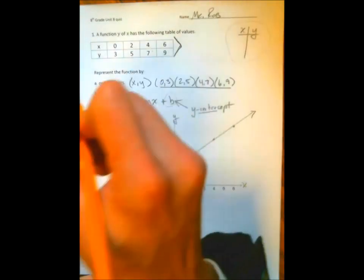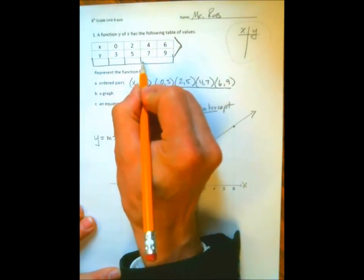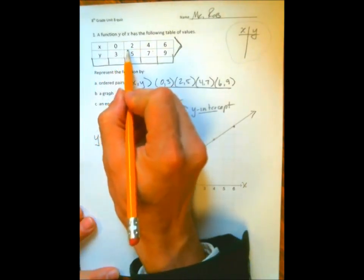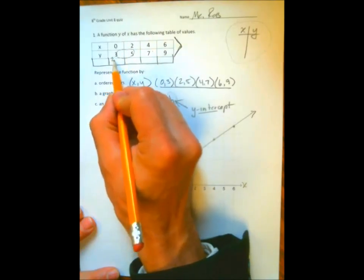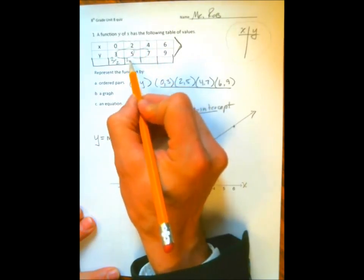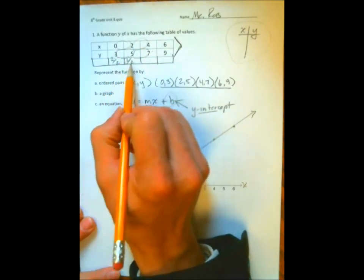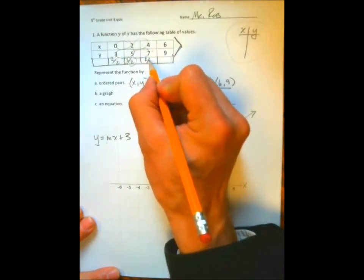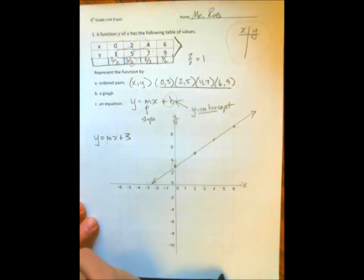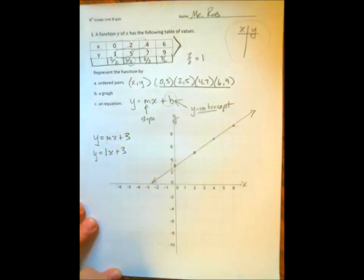Well, remember, the slope is defined as—remember in our chart that we created, we found the slope by dividing y over x. Well, for every time that y goes 2, x goes 2. See, from 3 to 5 is a difference of 2, and from 0 to 2 is a difference of 2. So you're taking the difference in y over the x. Well, 2 divided by 2 is equal to 1. So our slope is 1.